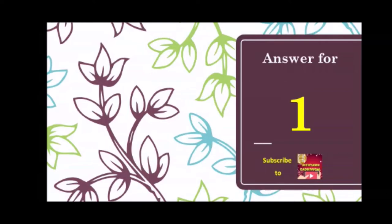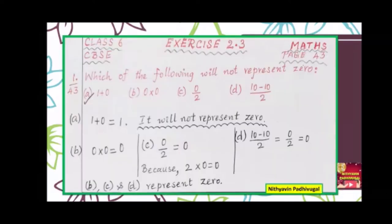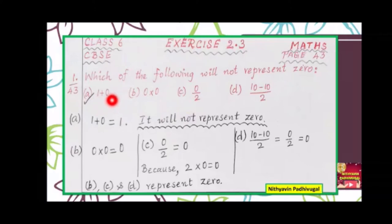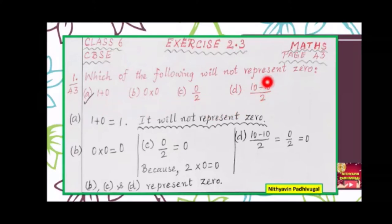Problem number 1 and its solution. Which of the following will not represent 0? We are given 4 options. We have to evaluate all 4 options and find out which is not equal to 0. This expression has 2 terms: 1 and 0. Here we have sum, multiplication, division, and difference with division. Which expression will not represent 0?